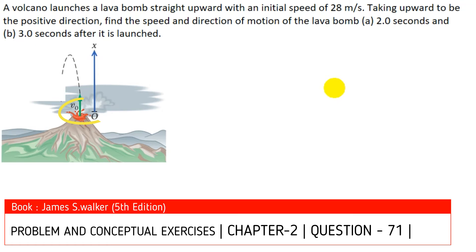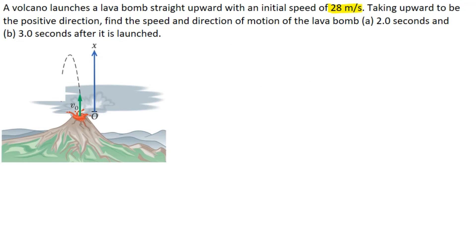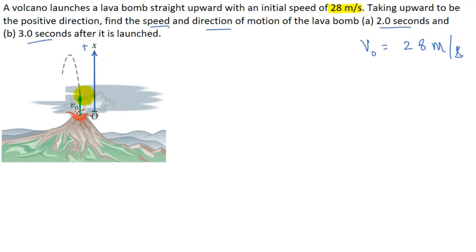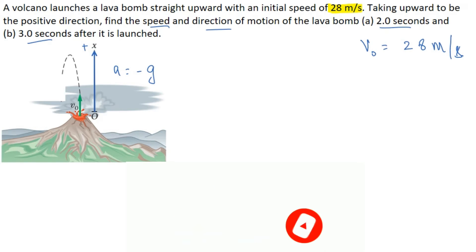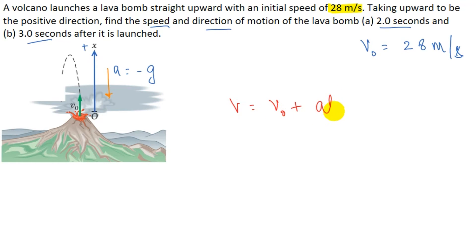A volcano launches a lava bomb straight upward with an initial velocity of 28 m/s. Taking the upward direction as positive, the acceleration is a = -g since gravity acts downward. To find velocity at t = 2 s and t = 3 s we use v = v₀ + at, which becomes v = v₀ - gt.